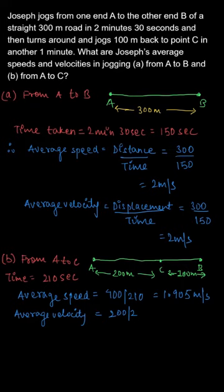But to calculate the average velocity, we will have to take the displacement. Your displacement is the line joining the initial and the final position. So your distance between A and C will be your displacement, which is taken here as 200m.